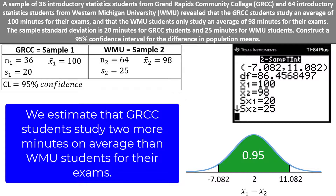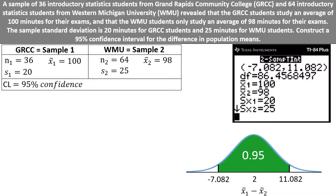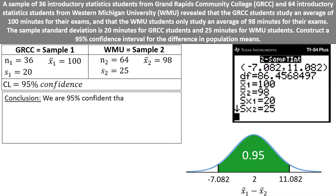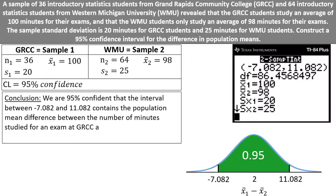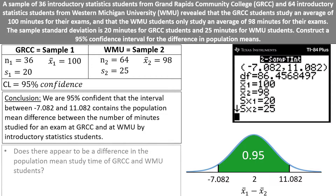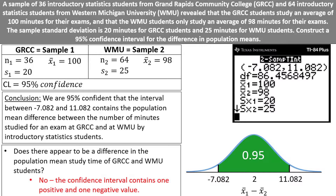Our official conclusion should be: we are 95% confident that the interval between negative 7.082 and 11.082 contains the population mean difference between the number of minutes studied for an exam at GRCC and WMU by introductory statistics students. Does it appear that there is a difference in the population mean study time? The answer is no, as the confidence interval contains both a positive and a negative value — the number zero is contained inside the interval, so the possibility of no difference in population means is consistent with this interval.